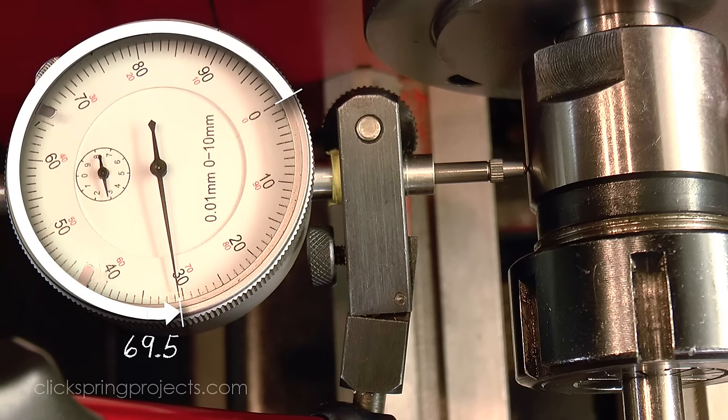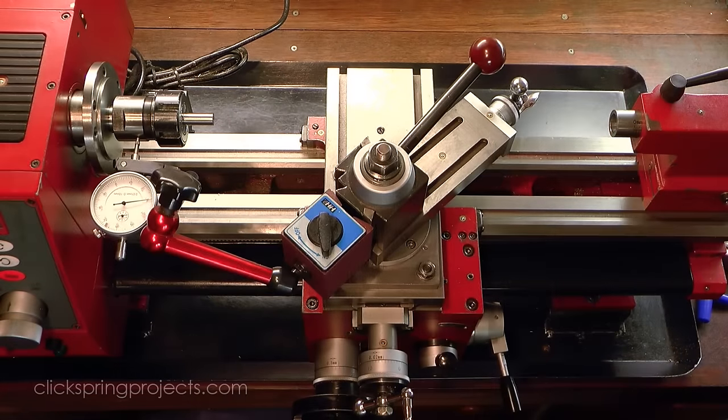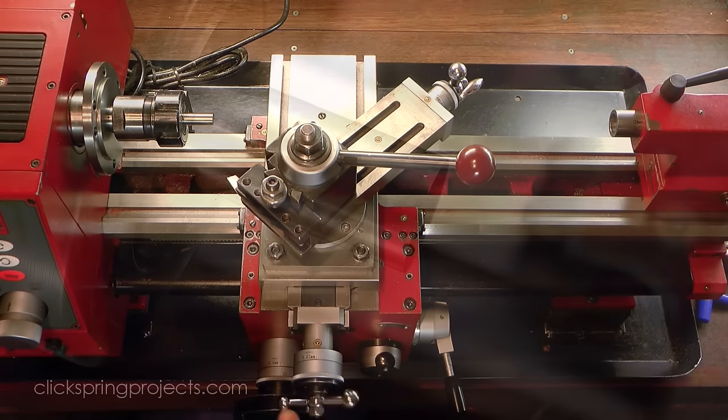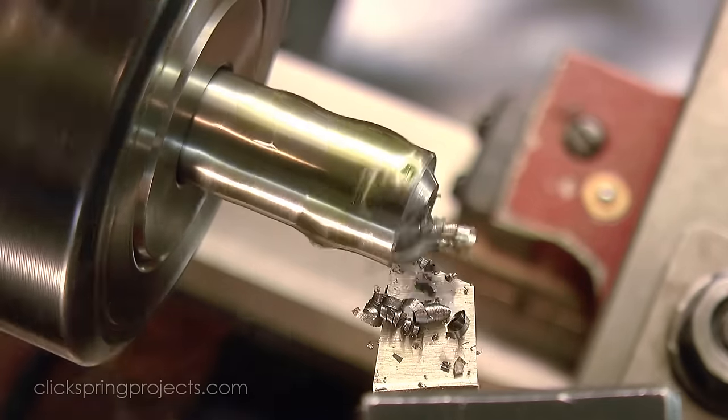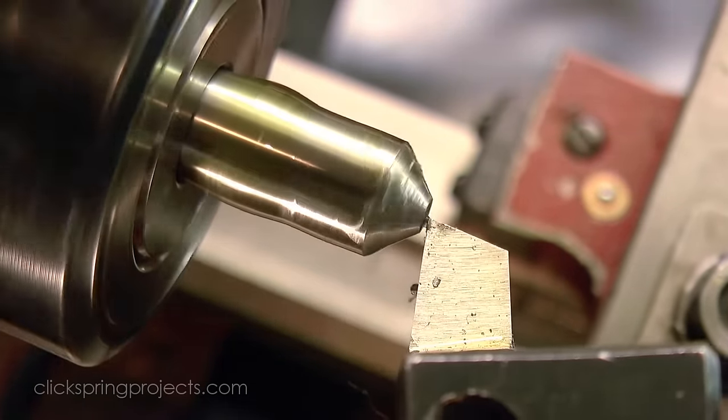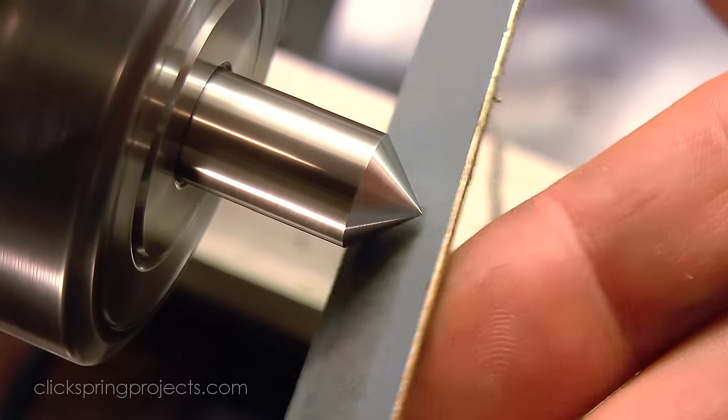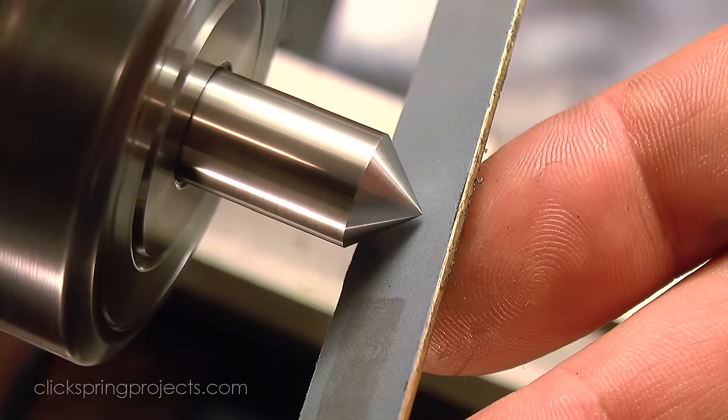Once the angle is set, the top slide is firmly locked down and the cut can be taken. Now another thing to keep in mind is the surface finish of that taper. Any tool marks left here will print directly onto the workpiece when forming the countersink, so it's worth the effort to improve the surface finish as much as possible before the next step.